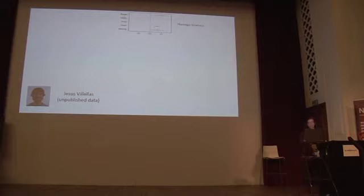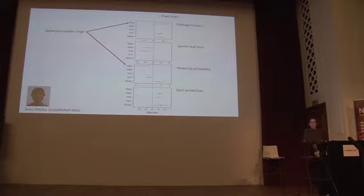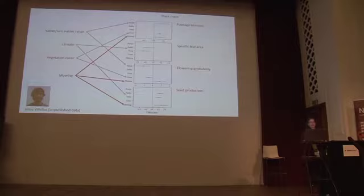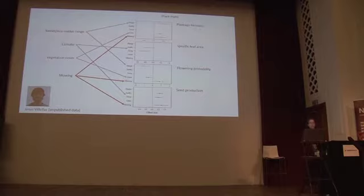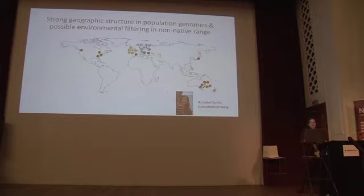We can look across all our sites and see what's driving variation in the morphological traits of Plantago. Looking at biomass, specific leaf area, flowering probability, and seed production, we can examine the relative influence of different drivers. The native and non-native range affects Plantago biomass and flowering probability. Climate affects specific leaf area and seed production. Vegetation cover affects flowering probability and biomass. And mowing — an anthropogenic impact — affects biomass and seed production. We're building up a picture of what affects how this plant looks and operates around the world.